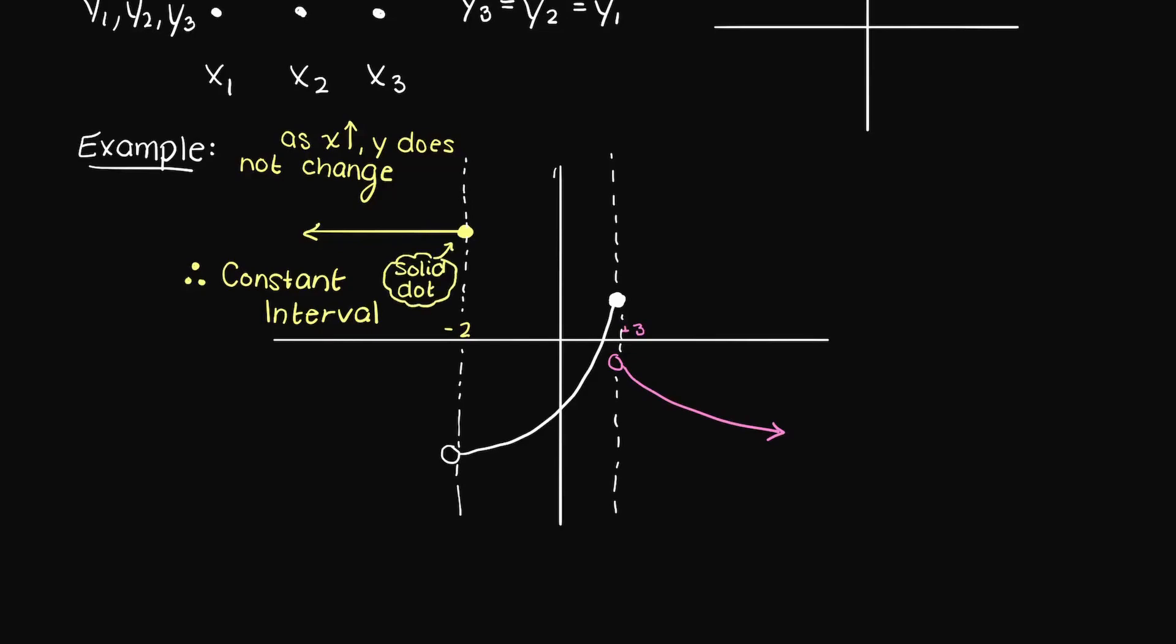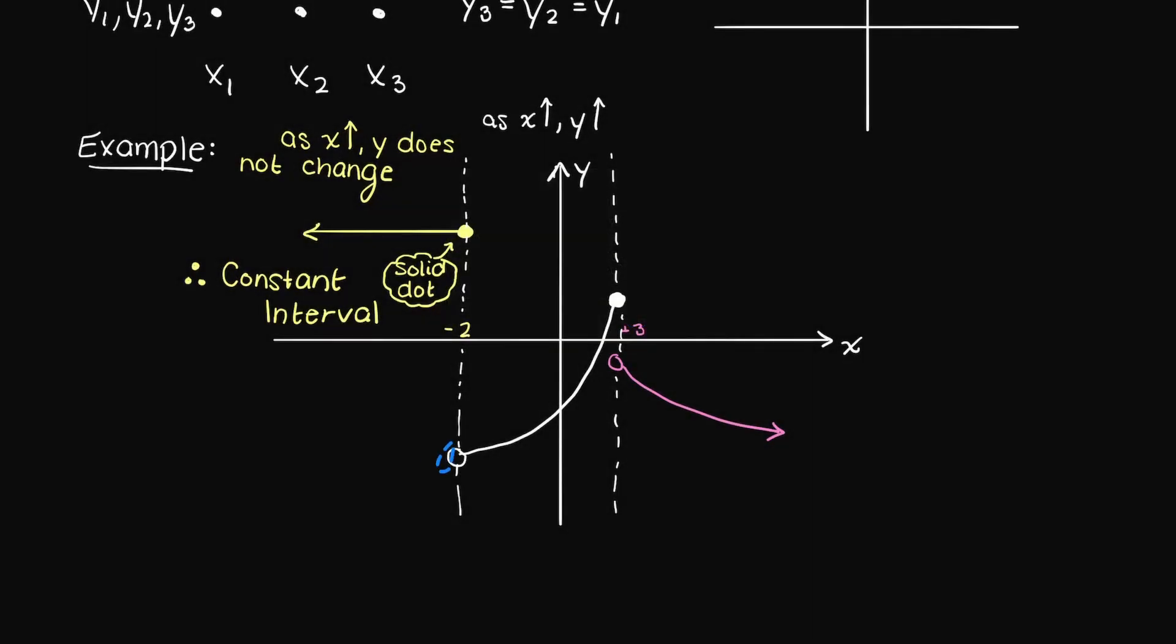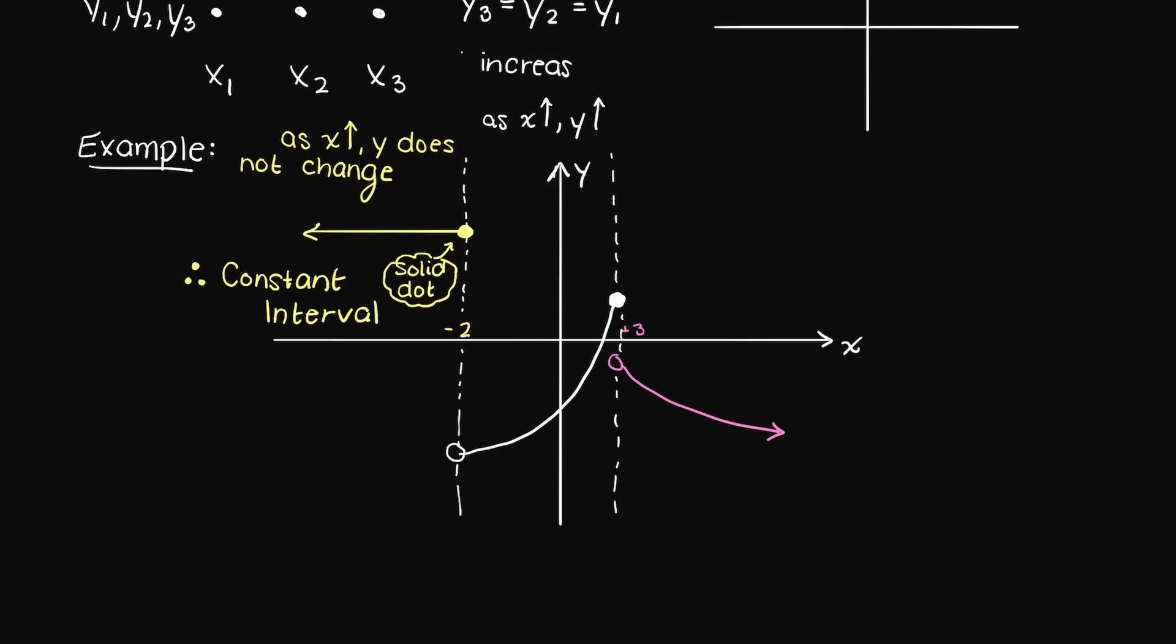We should also note that the solid dot means that at exactly negative 2, our function belongs to the first interval and not the second interval. The second interval, which essentially begins right after negative 2, has an increasing y value as we move along the positive x direction, therefore this interval of the function is positive between the interval of negative 2 and 3, however the start of this interval is really close to negative 2 but not exactly at it.